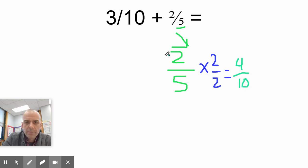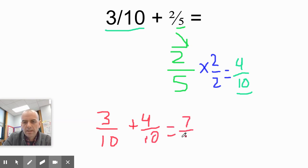Now I have two fractions with equal denominators so I can add them. So now all I have to do is take three tenths plus four tenths equals seven tenths. So what was nice is that I didn't have to change both fractions.